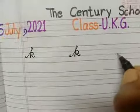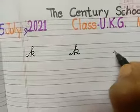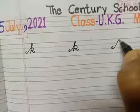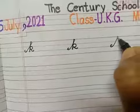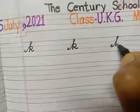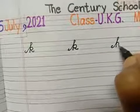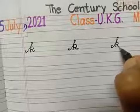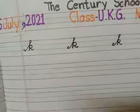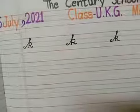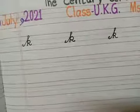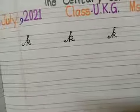Once again, make curve. Slot line, touch the red line, come back, touch the black line. Go up. It's our small letter K of alphabet.